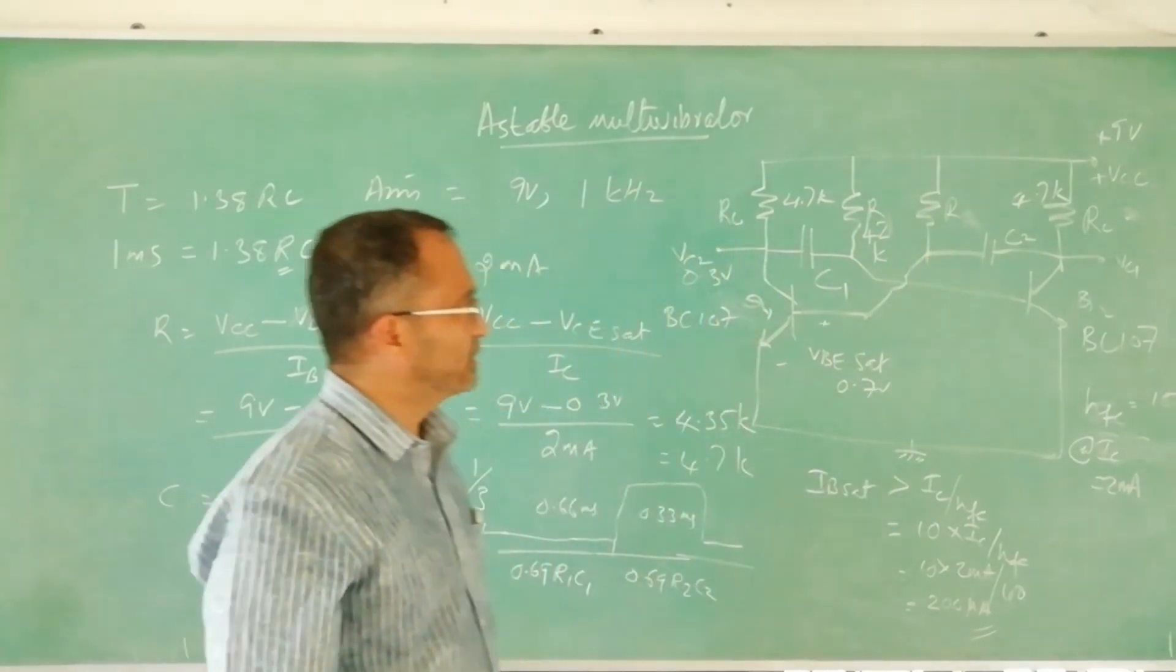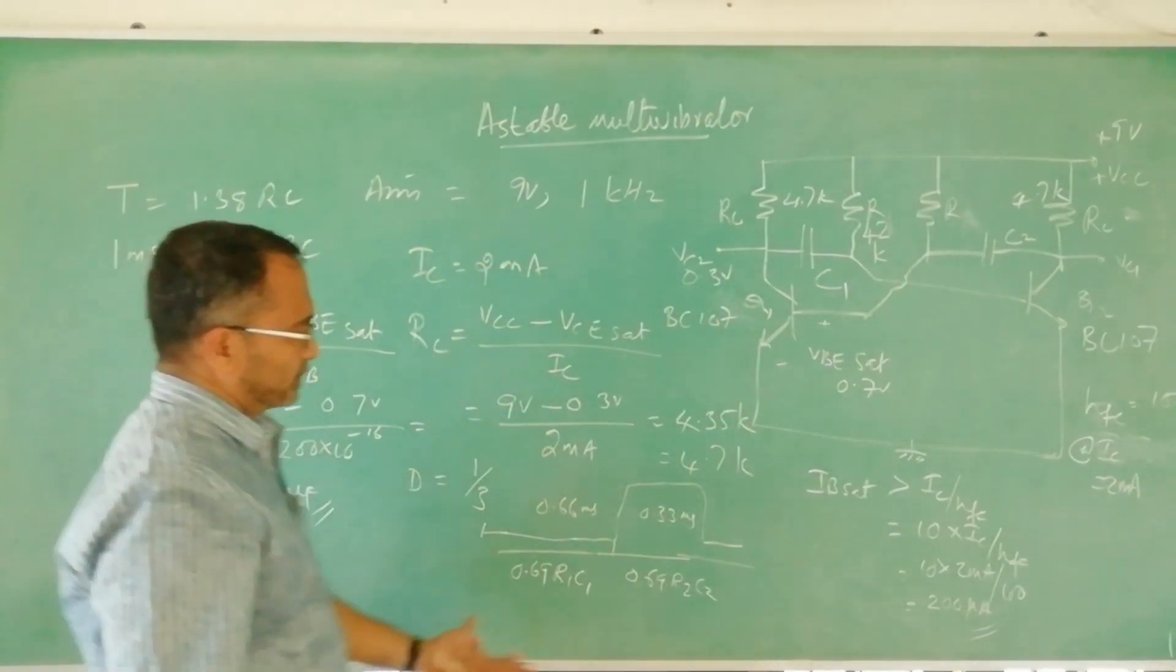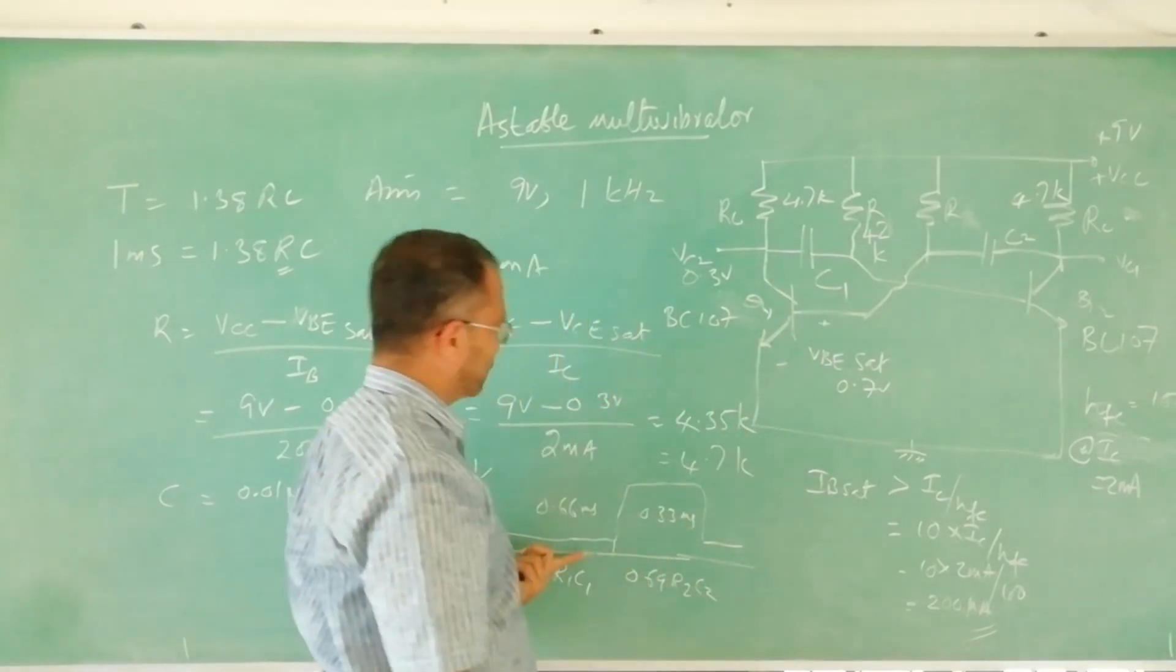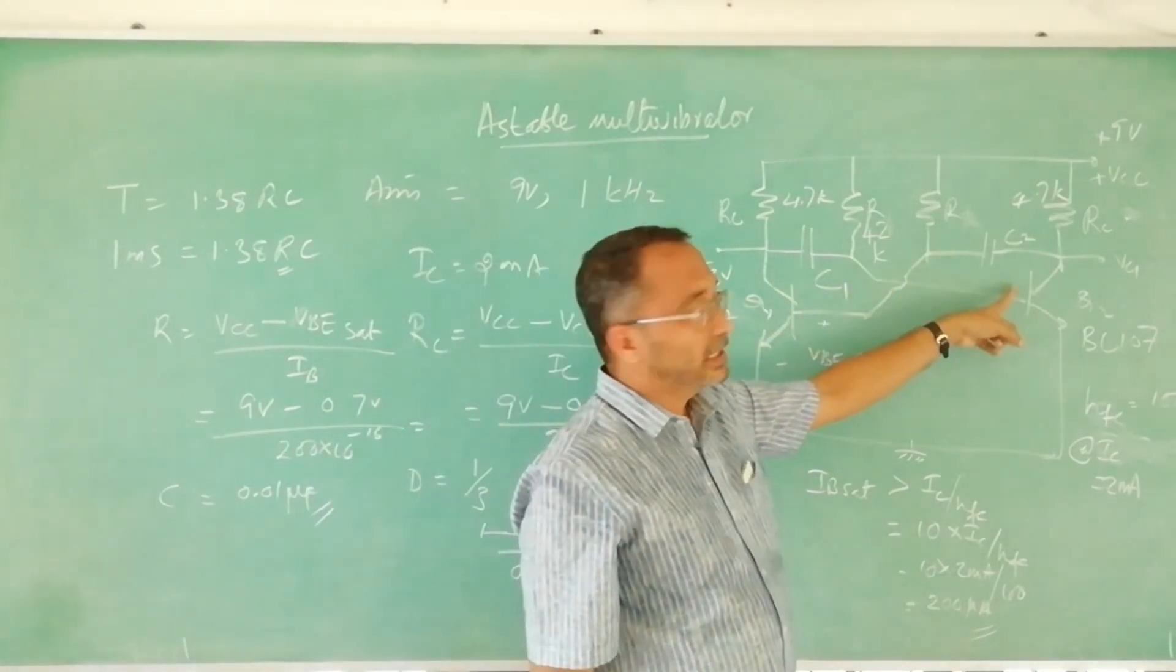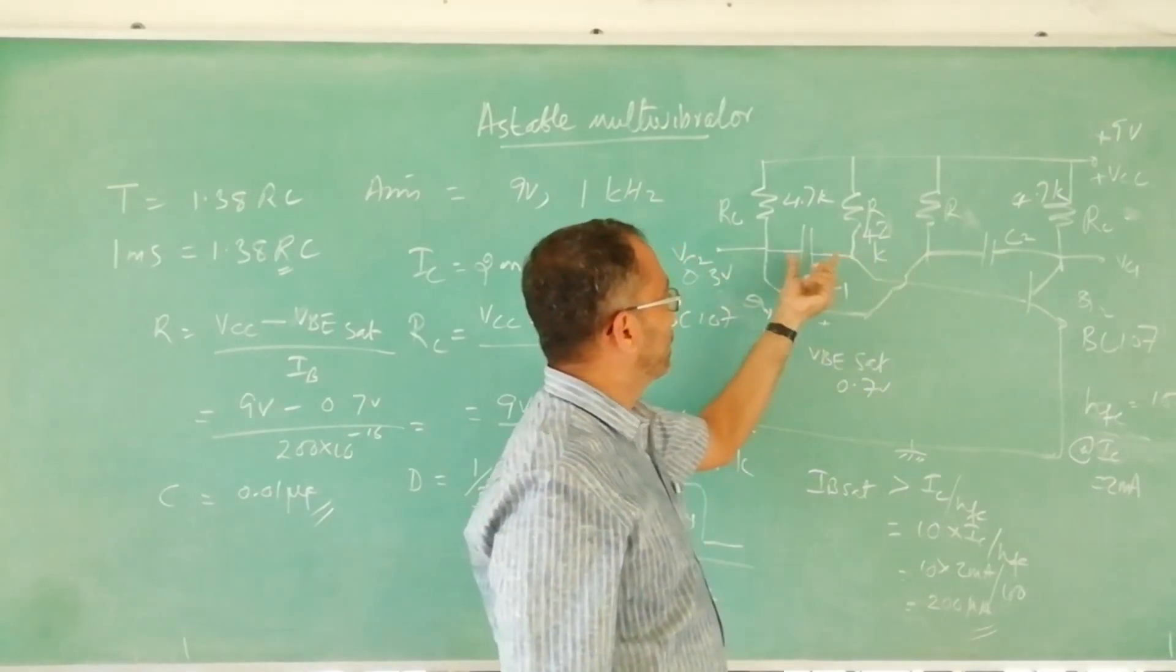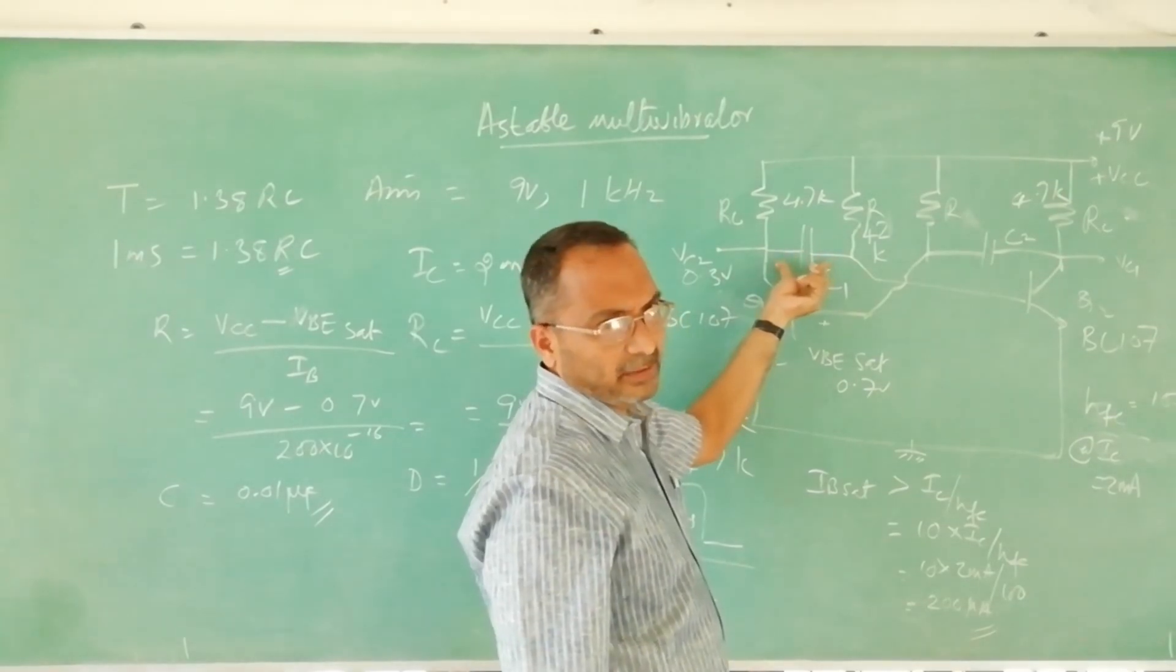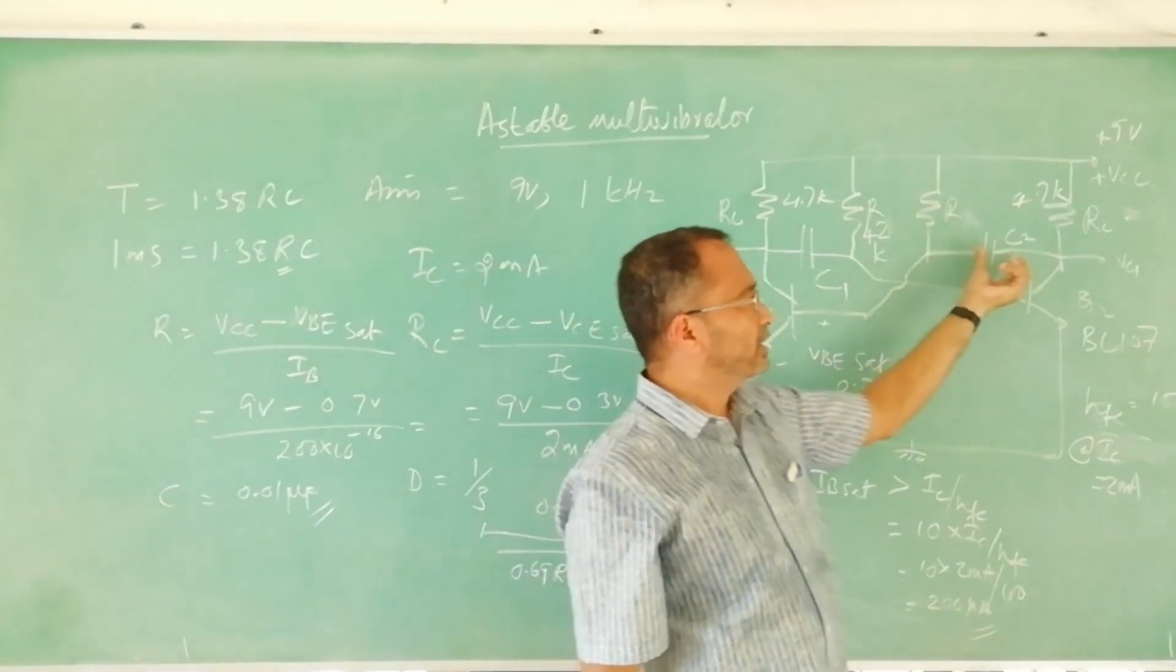There is no need of making R1 R2 different because R we design first and only C1 and C2 you may change. If this is equated to this, this capacitance will be half of this. If this is for example 22 microfarad this will be 10 microfarad.